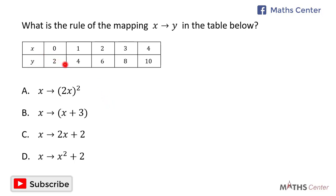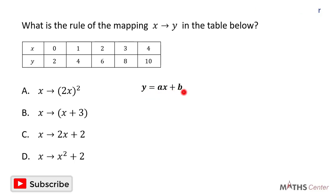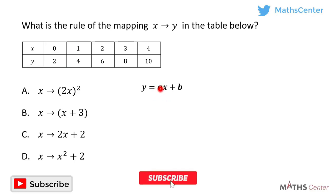Looking at the table carefully, the difference between consecutive x values is the same, and the difference between consecutive y values is also the same. This means the mapping is a linear mapping. If it's a linear mapping, the rule is of the form y is equal to ax plus b. We can take any two sets of values and substitute into this equation to get the values of a and b.